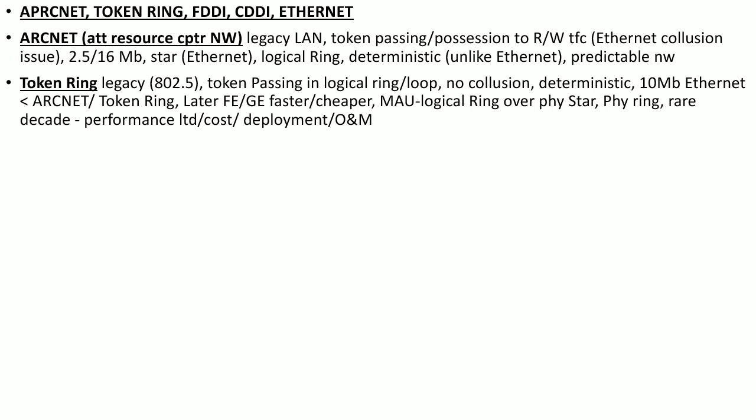Token Ring uses Multi-Access Units or MAU to operate this logical ring over a physical star topology. It can also use the physical ring topology, but for physical star topology it must use the MAU or Multi-Access Unit. This technology is rare and has not been seen for about a decade, because there were certain performance issues, the cost was very high compared to Ethernet, and the deployment and operation and maintenance of Token Ring was also more difficult.